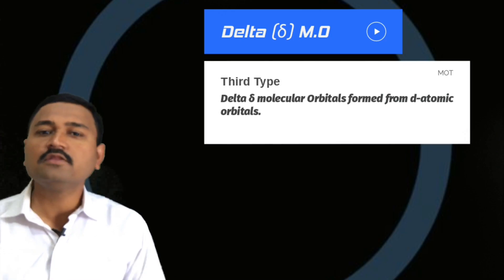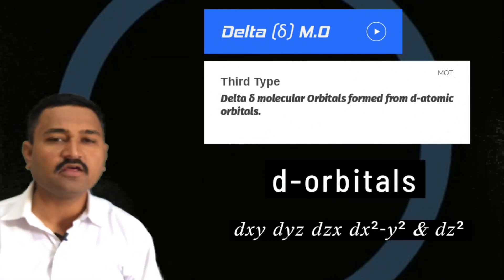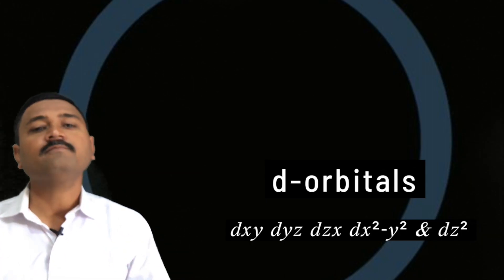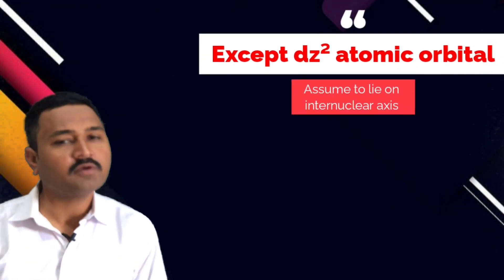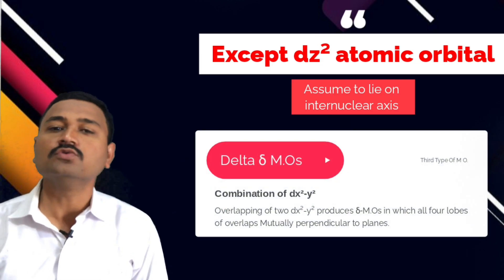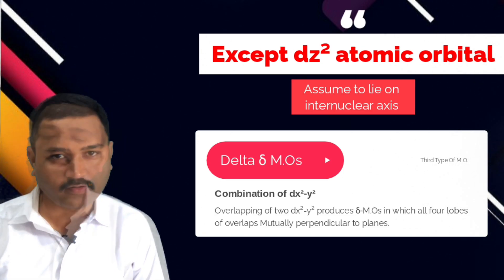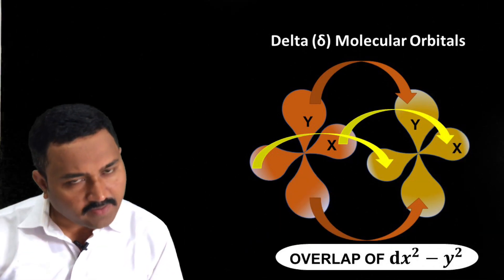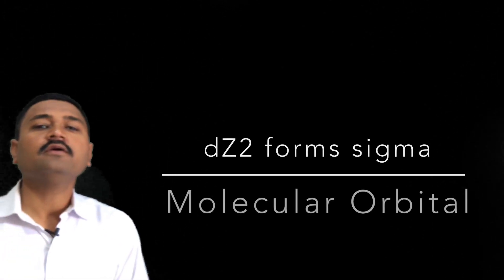You must remember that delta molecular orbitals are generally formed in d atomic orbitals. As we know, d atomic orbitals contain five lobes, represented as dxy, dyz, dxz, dx²-y², and dz². Except for dz², all other d atomic orbitals show delta molecular orbitals. When two dx²-y² atomic orbitals of two atoms overlap, all four lobes overlap mutually perpendicular to each other, leading to the formation of the delta molecular orbital.